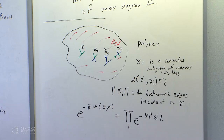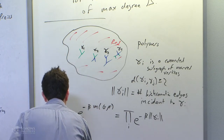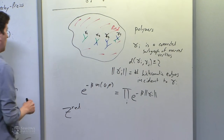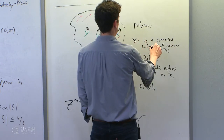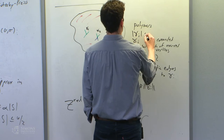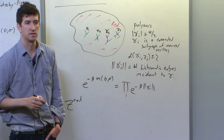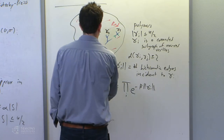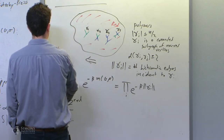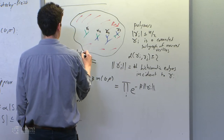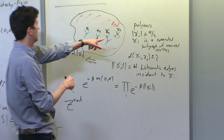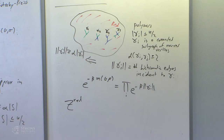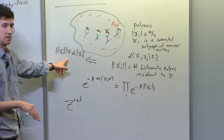Right away we can write that, for a particular coloring sigma, e^{-beta times the number of bichromatic edges} equals the product over these polymers of e^{-beta times the surface energy}. This is the weight of the Potts configuration, written as a product over polymers. Since they're small — at most n/2 vertices — and since it's an expanding graph, the surface energy is at least alpha times the size. So we have some lower bound on this surface energy term.